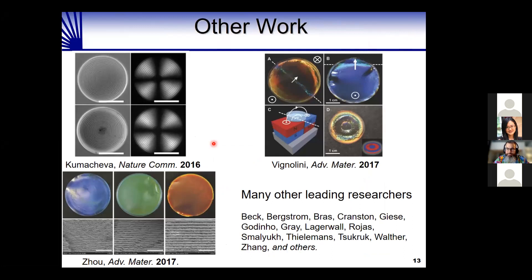We're not working in a vacuum — there are many people around the world doing really beautiful work with structural coloration from cellulose nanocrystals. I'll show just a few examples from Eugenia Kumacheva, Professor Zhao, and Professor Vignolini, as well as many other leading researchers including researchers at UBC like Emily and Orlando, and others from across the country and the globe.